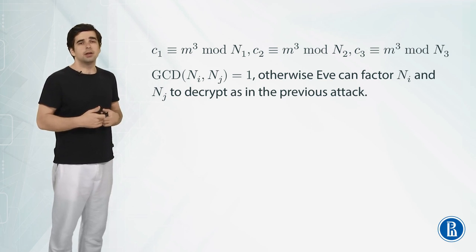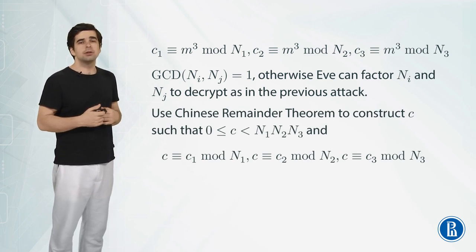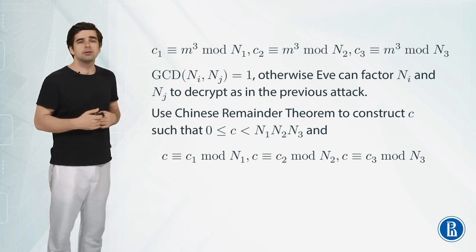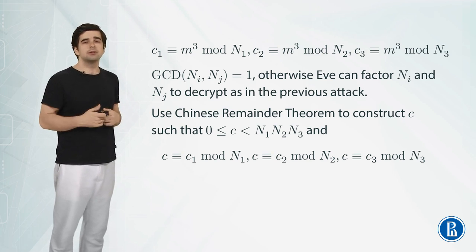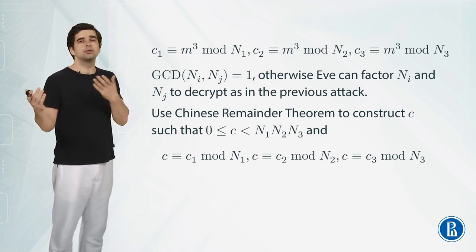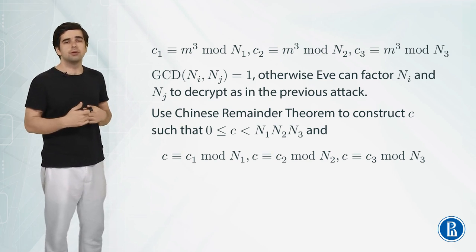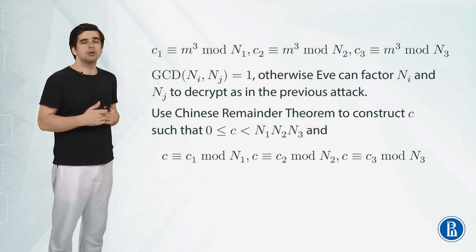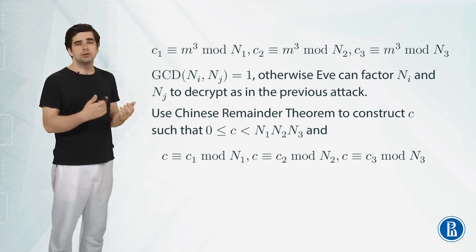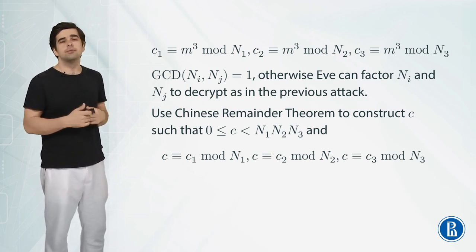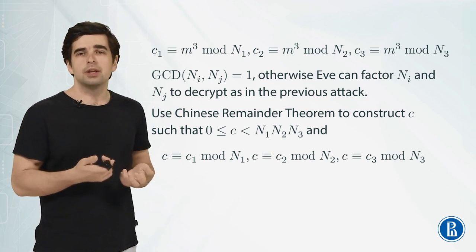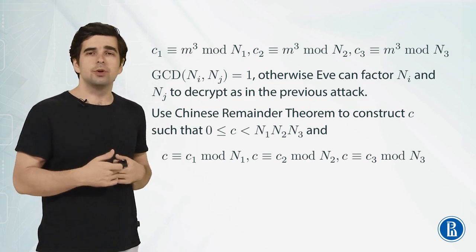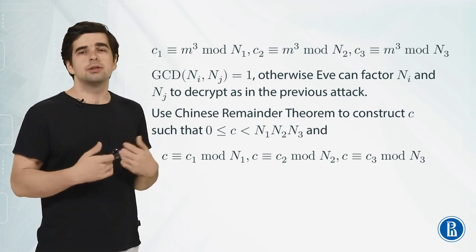As they are pairwise coprime we can use the Chinese remainder theorem and in particular we're going to use it to construct such c that of course this c is a remainder modulo of the product of these three moduli between 0 and N₁N₂N₃ and also c has the same remainder modulo N₁ as c₁, the same remainder modulo N₂ as c₂ and the same remainder modulo N₃ as c₃. This is not just possible. This is possible and can be done using an algorithm we learned in the previous module which is based on the extended Euclid's algorithm.